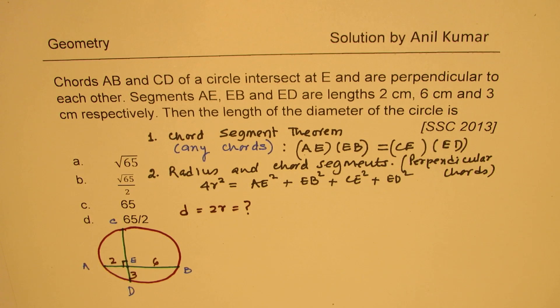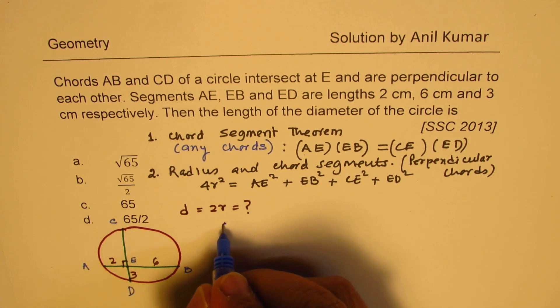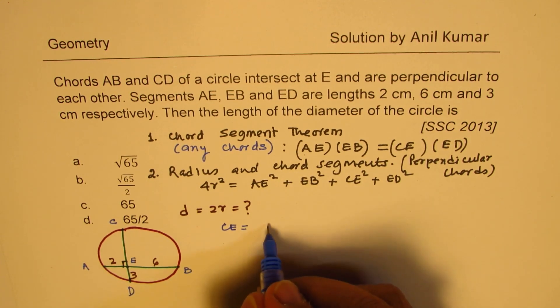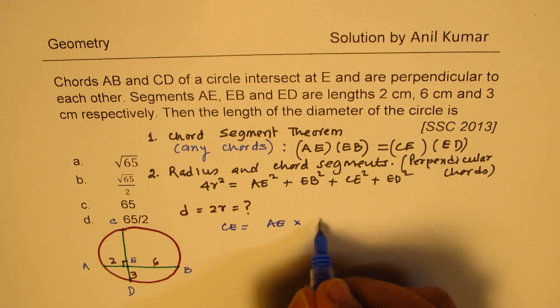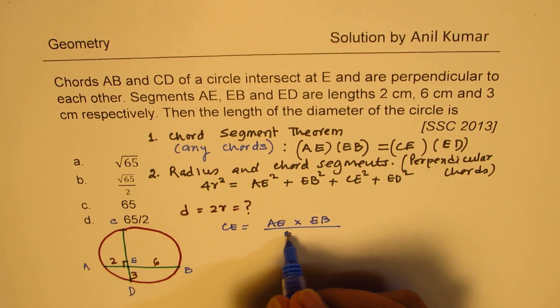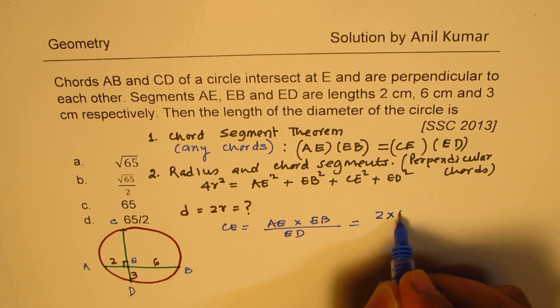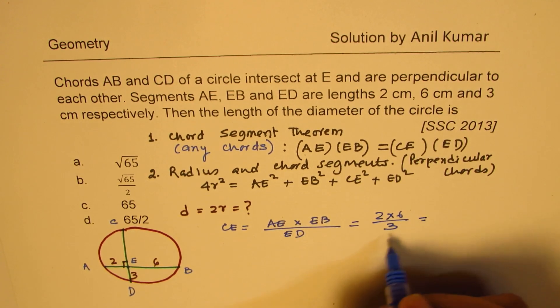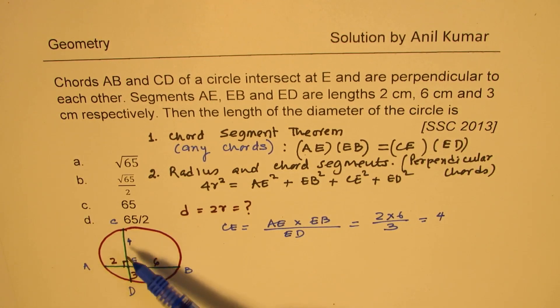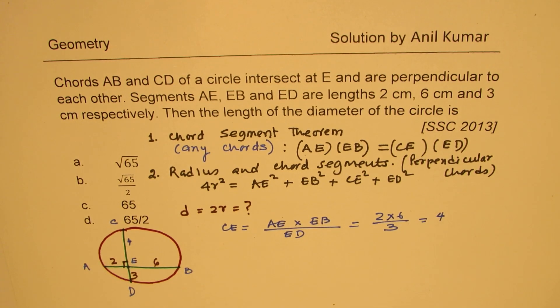Now see how easily you can do it. So first thing from the given information, let us find what CE is. So we say CE should be equal to what? Product of these two, which is AE times EB divided by this side, which is ED. So it is two times six divided by three, which is four. So this is four. Or you can say now product of four and three is 12. Six and two is also 12. So CE is four.